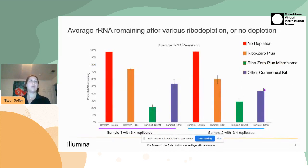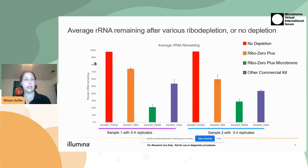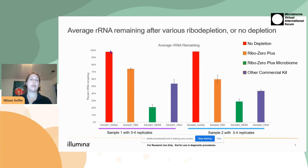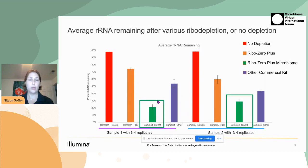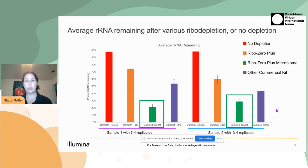The key question is how much rRNA is remaining after depletion. On the x-axis we have the percent rRNA remaining. With no depletion — shown as the two red bars — we see almost 100% rRNA. The current RiboZero Plus product was designed with E. coli and Bacillus only, so while there is some depletion, it doesn't work as well as the one designed specifically for the microbiome, which depletes a wide diversity of rRNA from various bacteria. Here's also another commercial product comparison.